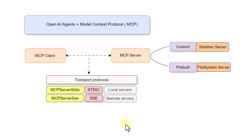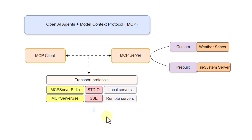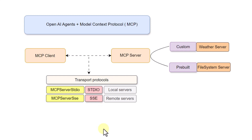Earlier we covered how to enable the MCP server using stdio transport protocol. In this video we are going to focus on SSE transport protocol, which is going to help us connect to remote servers. In this demo we are still going to use our local code, but instead of exposing it using stdio protocol, we are going to expose it using SSE protocol and then connect to it using MCP server SSE.